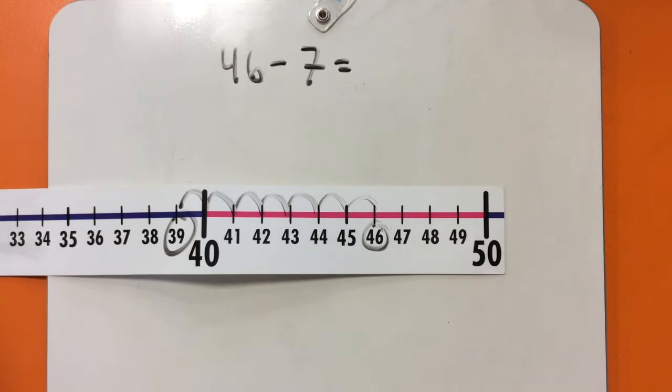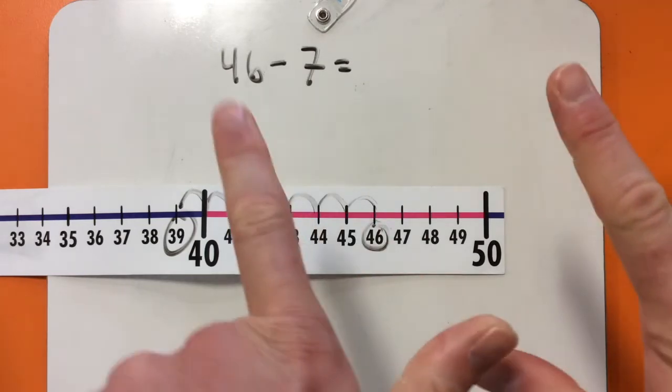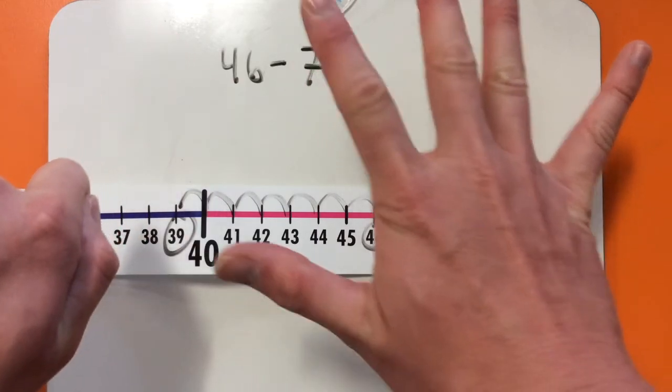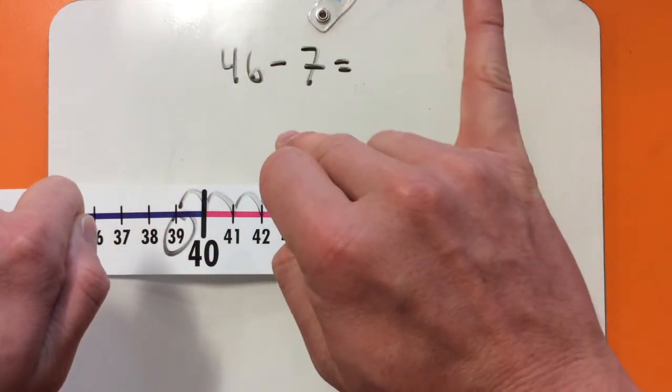Similarly, we could do that on our fingers. We're starting at 46 in our heads. There are 7 fingers, a 5 and a 2: 46, 45, 44, 43, 42, 41, 40, 39.